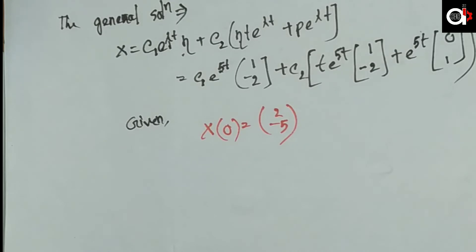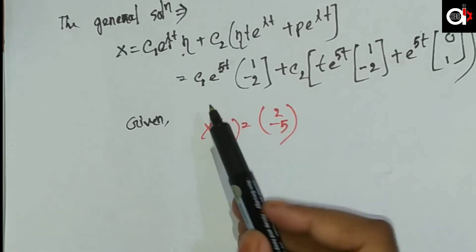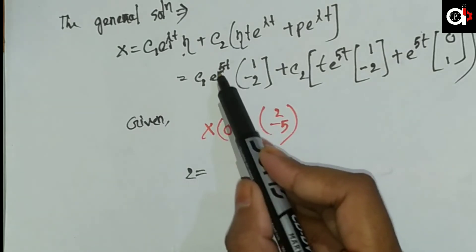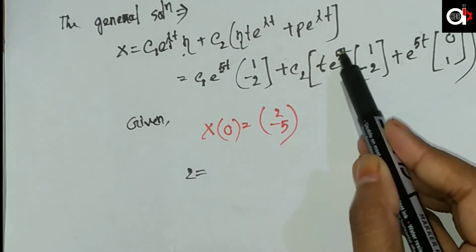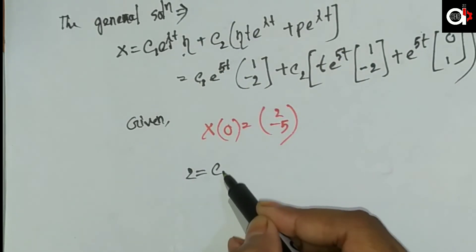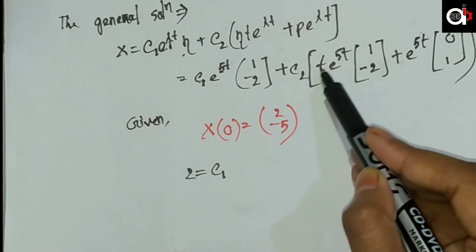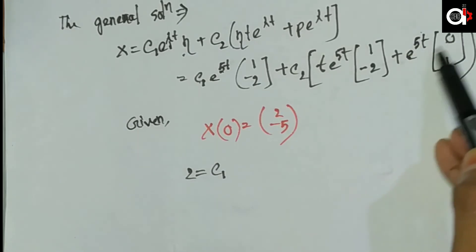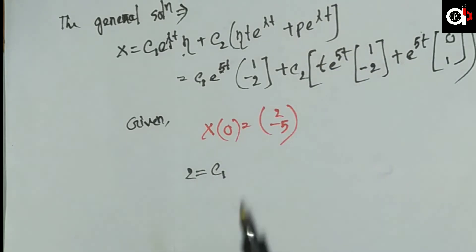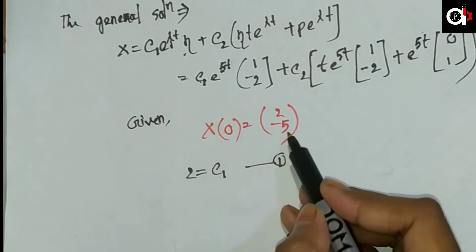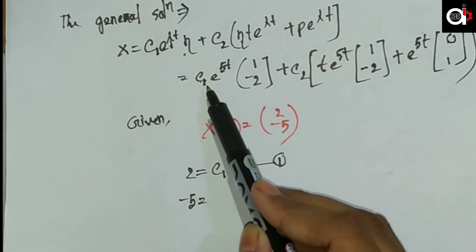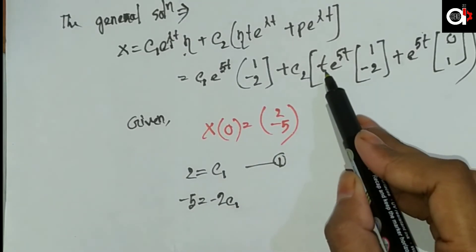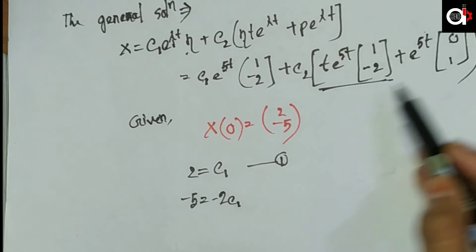This is our general solution, but we have an initial value problem. The initial condition given is x(0) equals [2, minus 5]. Substituting t equals zero into our general solution, the e to the power zero terms equal 1 and the t times e to the power zero terms vanish. This gives us equations for c1 and c2 from the first and second components.